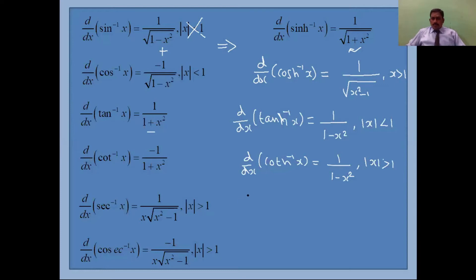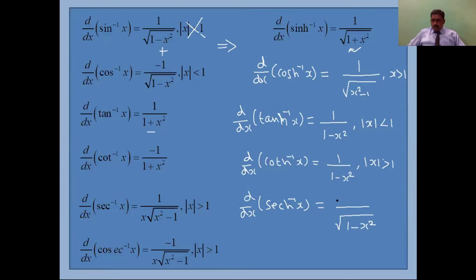The reciprocal of the tanh term gives d/dx of coth⁻¹(x) equal to 1 over (1 − x²), where the modulus of x is greater than 1. Next, d/dx of sech⁻¹(x): since secant is the reciprocal of cosine, comparing with the cosh⁻¹ formula, we reverse x² − 1 to get 1 − x², move the minus to the numerator, and introduce x in the denominator, with x between 0 and 1.